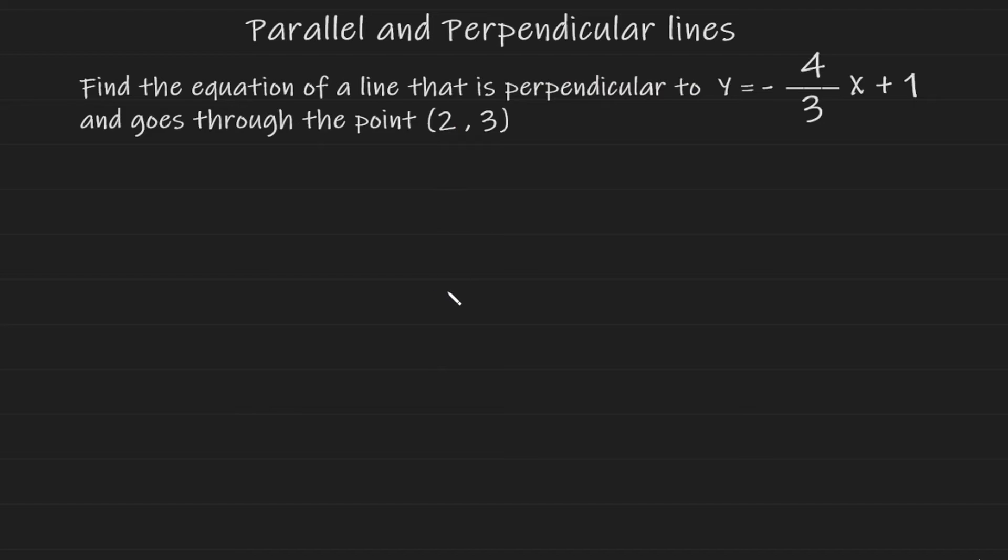Okay, now for our final example, here they're asking us to find the equation of a line that is perpendicular to the equation of this line, y equals minus 4 over 3x plus 1, and goes through the point (2, 3). So we're going to start this like we did in the previous example, and write y equals mx plus c, the equation of any line.